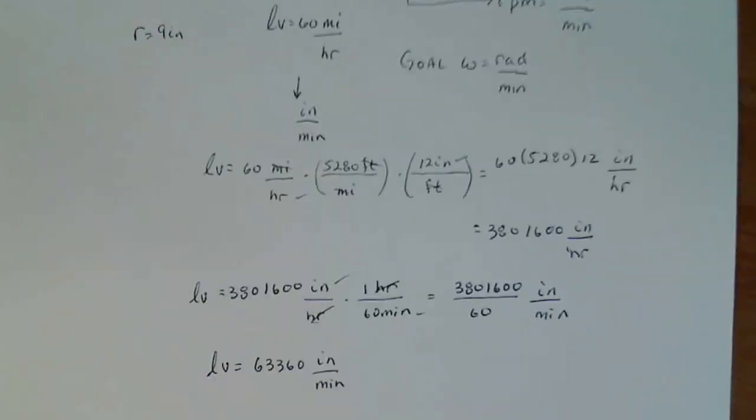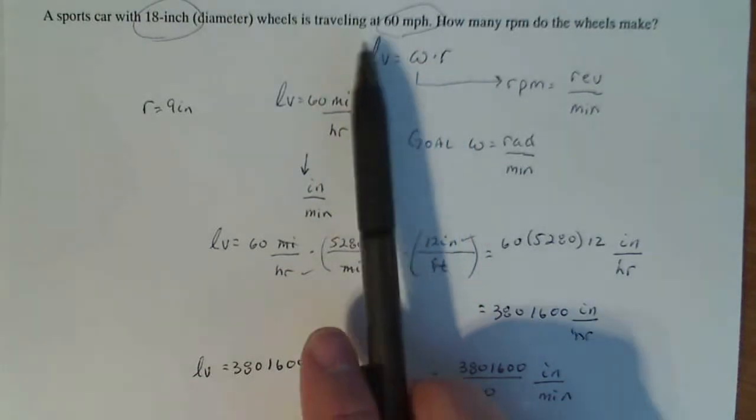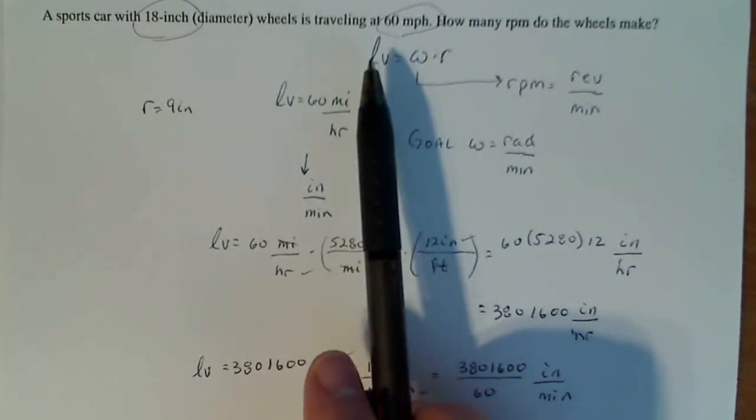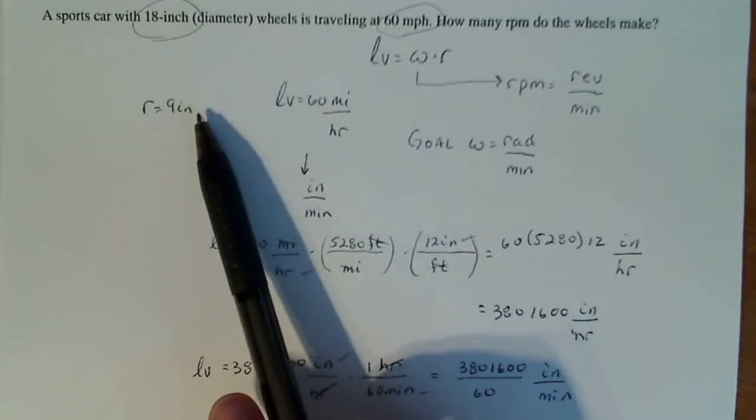Okay, now after all that work, I can just use this formula. So my linear velocity and my omega and my radius are all in the same unit of measure. So I know that my current linear velocity is going to equal omega times my radius, which is 9 inches.